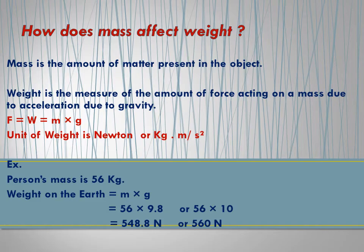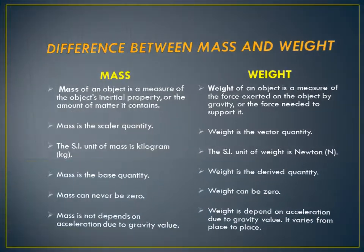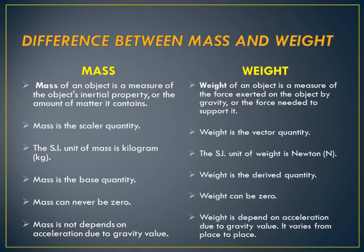After calculating, we get the weight of that person on the Earth. Now let us discuss some more differences between mass and weight. Our first point is: mass of an object is a measure of the object's inertial property, or the amount of matter it contains, and the weight of an object is a measure of the force exerted on the object by gravity, or the force needed to support it.